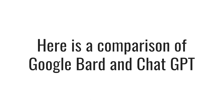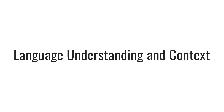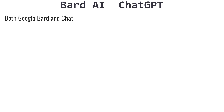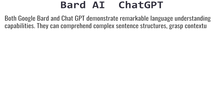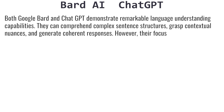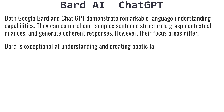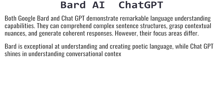Comparison. Here is a comparison of Google Bard and ChatGPT. Language understanding and context: both Google Bard and ChatGPT demonstrate remarkable language understanding capabilities. They can comprehend complex sentence structures, grasp contextual nuances, and generate coherent responses. However, their focus areas differ — Bard is exceptional at understanding and creating poetic language, while ChatGPT shines in understanding conversational context and generating appropriate responses.